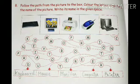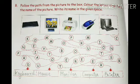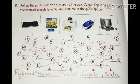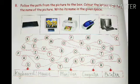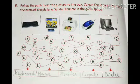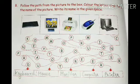Follow the path from the picture to the box and then write the word it is forming. You have to trace the path, follow it, and at the end see which word it's forming. The first one is keyboard, second is mouse, third is monitor, fourth is computer, and fifth is printer.